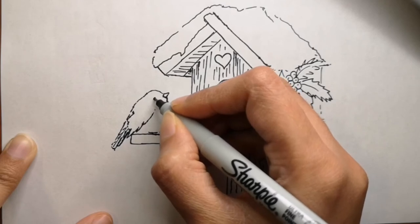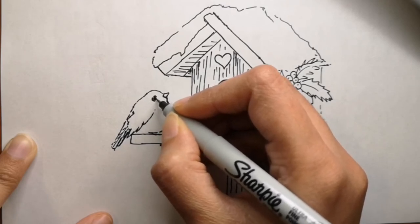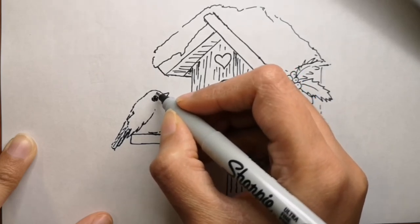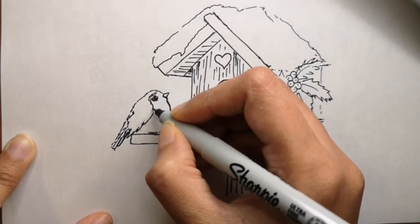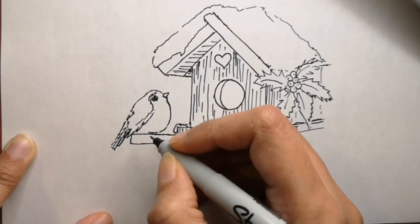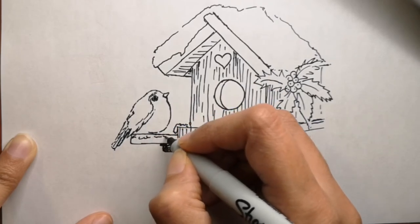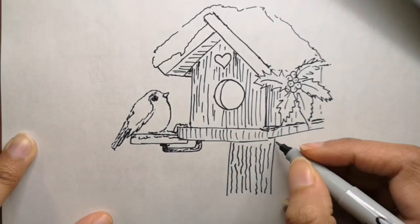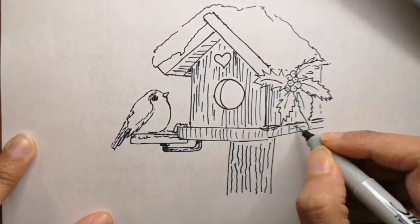Also, some believe that birdhouses should be taken down during the wintertime because birds don't use them and other creatures will come in. That is not true. A birdhouse makes a great roosting house in the winter. Eastern bluebirds will pile into houses to spend cold nights. One photographer once even snapped a picture of 13 male bluebirds in a single house.